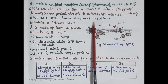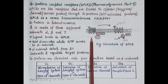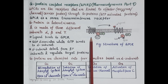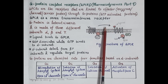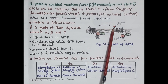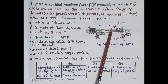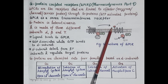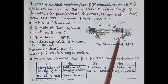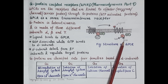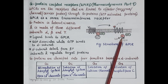G protein is heterotrimeric, meaning it is made up of three different subunits: alpha, beta, and gamma. In the inactive state of the G protein coupled receptor, GDP (guanosine diphosphate) remains attached to the alpha subunit. When a signaling molecule such as adrenaline or histamine binds to the receptor, GDP dissociates and GTP (guanosine triphosphate) binds to the alpha subunit.